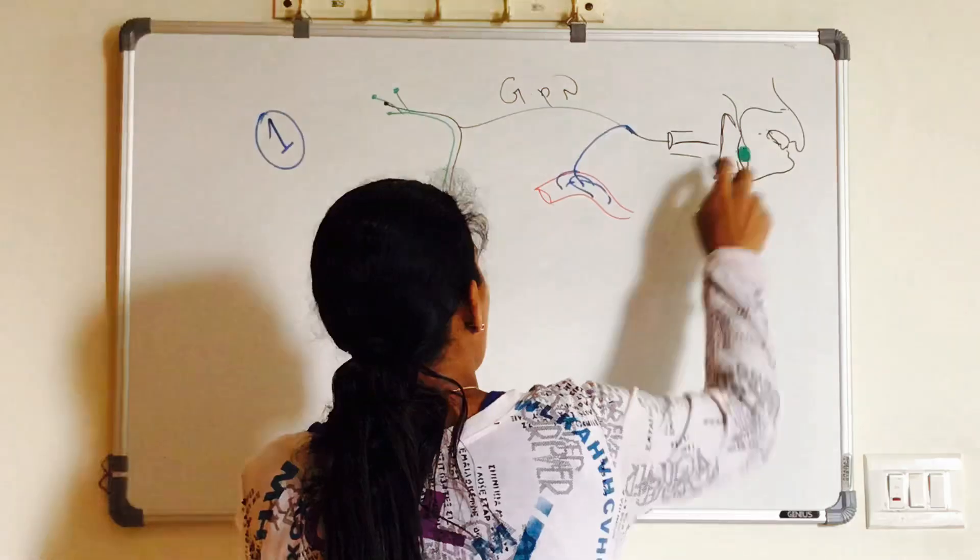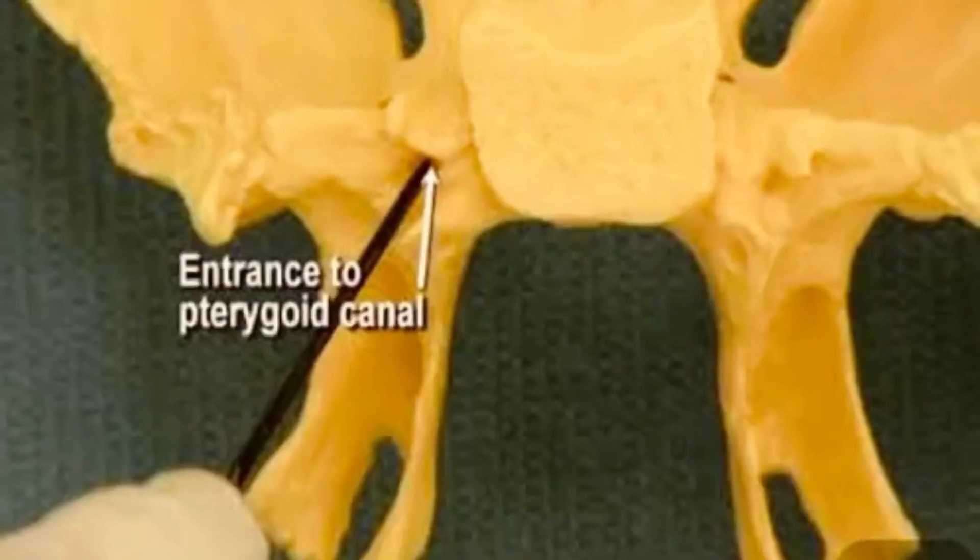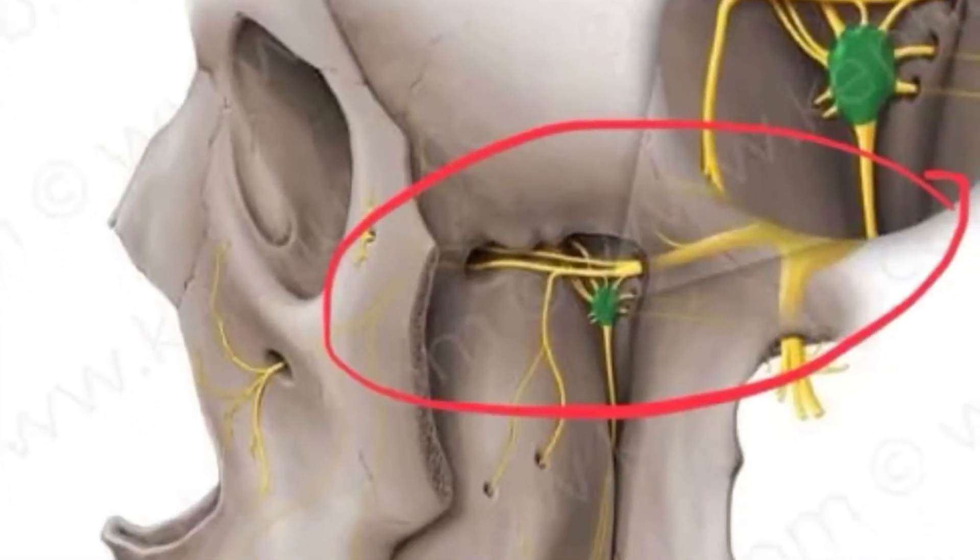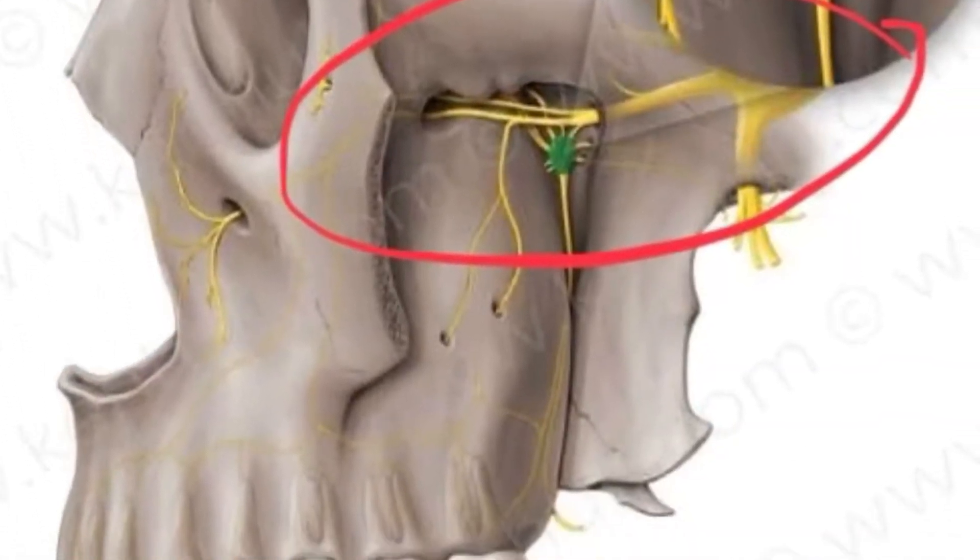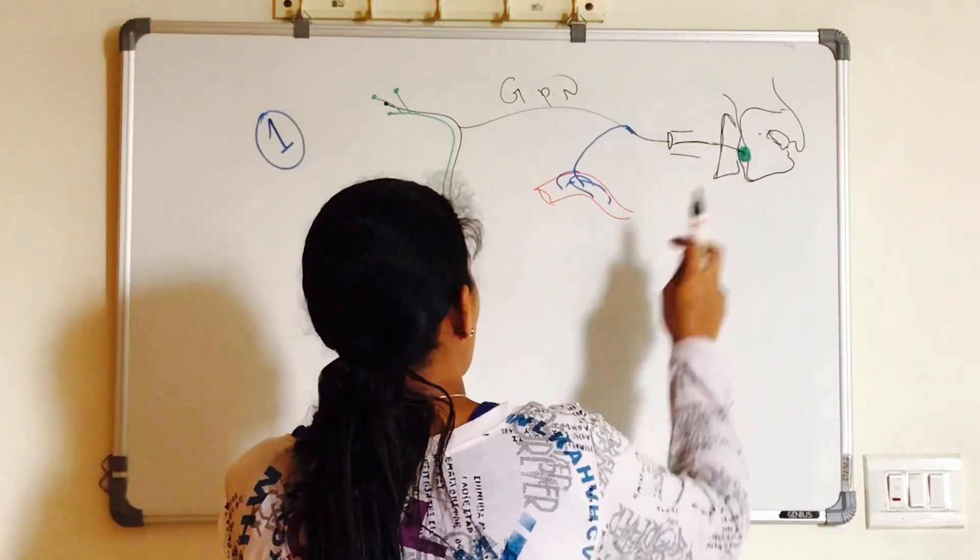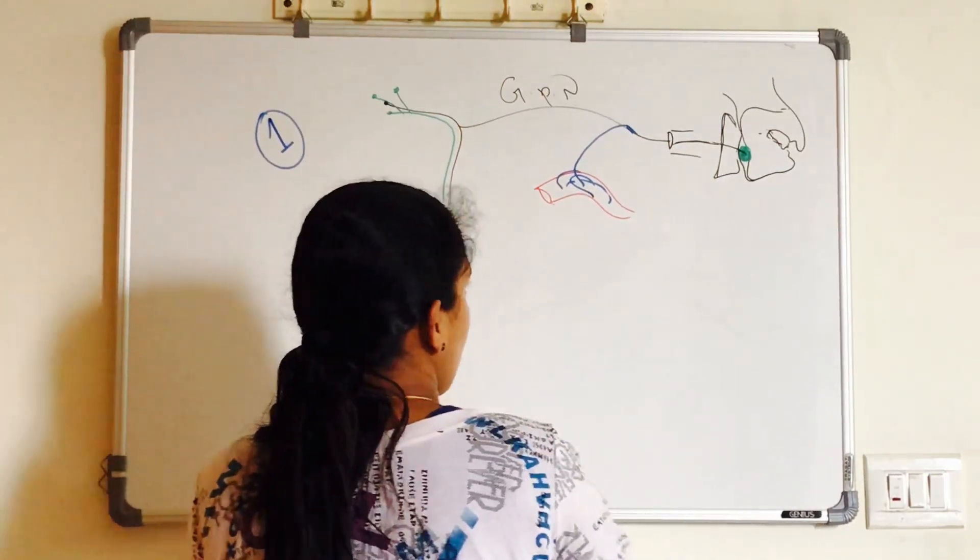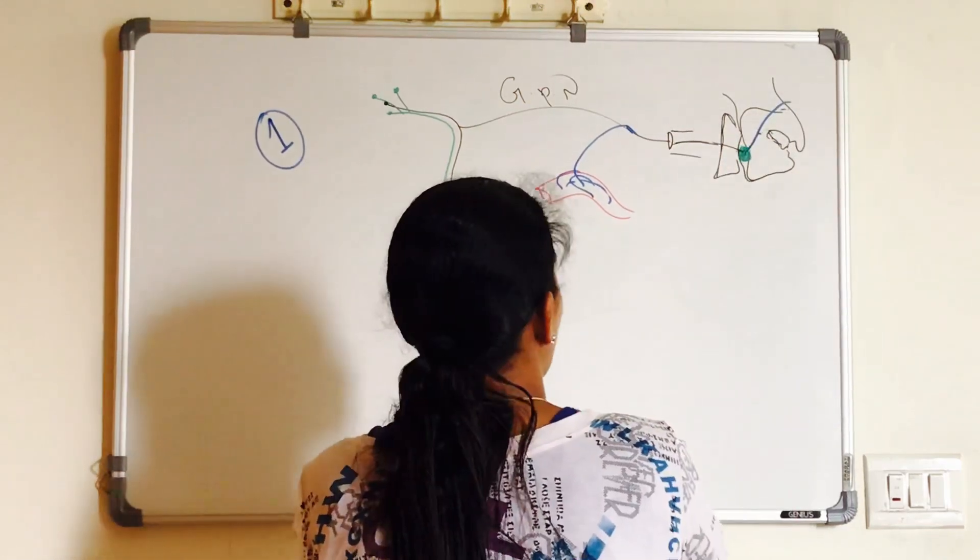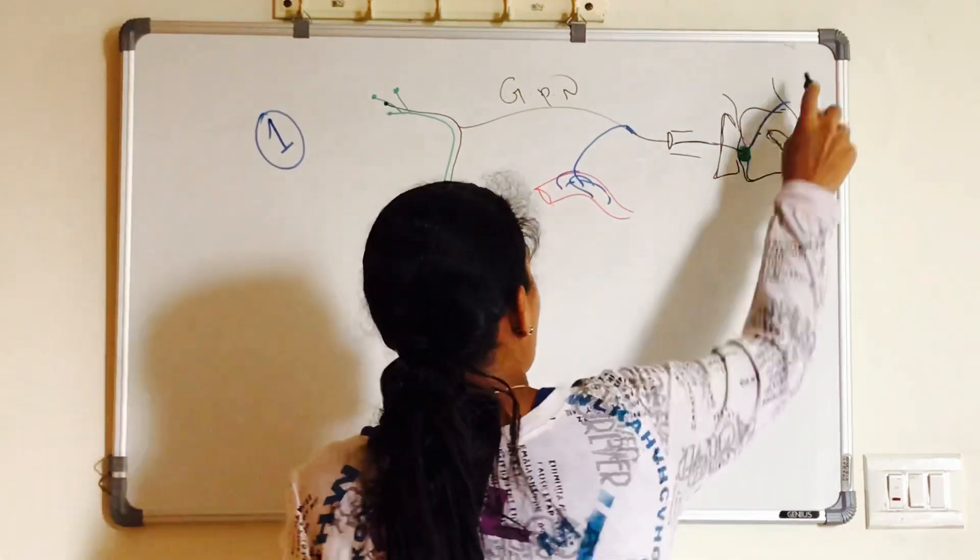There is a ganglion called pterygopalatine ganglia present in the fossa. Now the post ganglionic fibers, you can see the canal which reaches your pterygopalatine fossa. These fibers supply your lacrimal gland, glands of palate and nose.